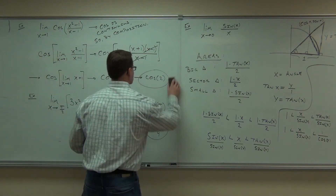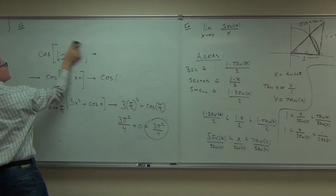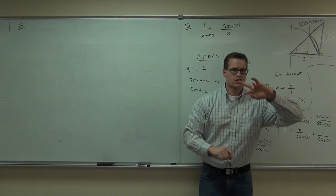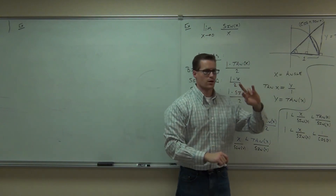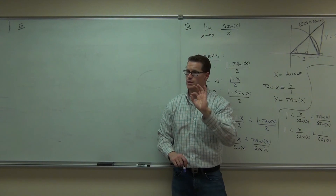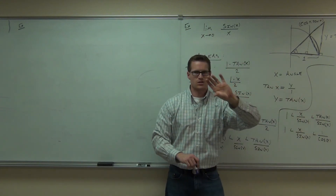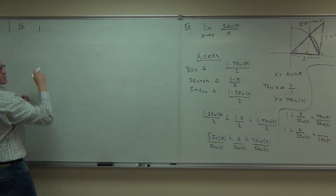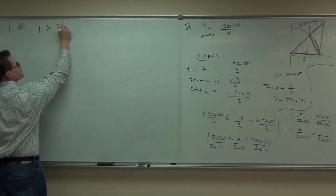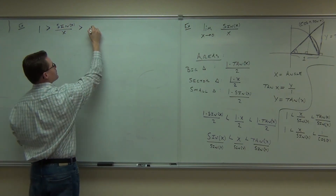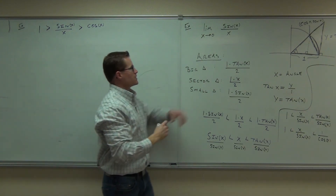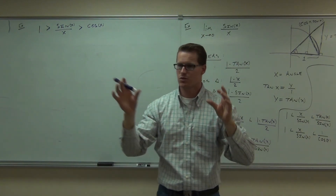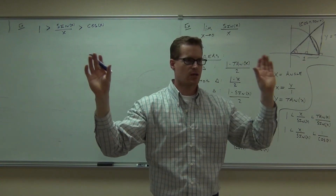We're almost done. Now I'm going to reciprocate each of those fractions — the one, the X over sine X, and the one over cosine X. Reciprocating also flips the inequalities. So we get: one is greater than sine X over X, which is greater than cosine X. Do you see how sine X over X is squeezed between two functions? It's squeezed between one and cosine X.